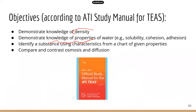Next, you need to know the properties of water. Water as a very unique substance has quite a few characteristics. For example, solubility, cohesion, adhesion. We'll go over each of these properties. Next, you should be able to identify a substance using characteristics from a chart of given properties. Basically, this may give you a chart or table with numbers for different physical and chemical properties, and you need to be able to use that information to identify an unknown substance.